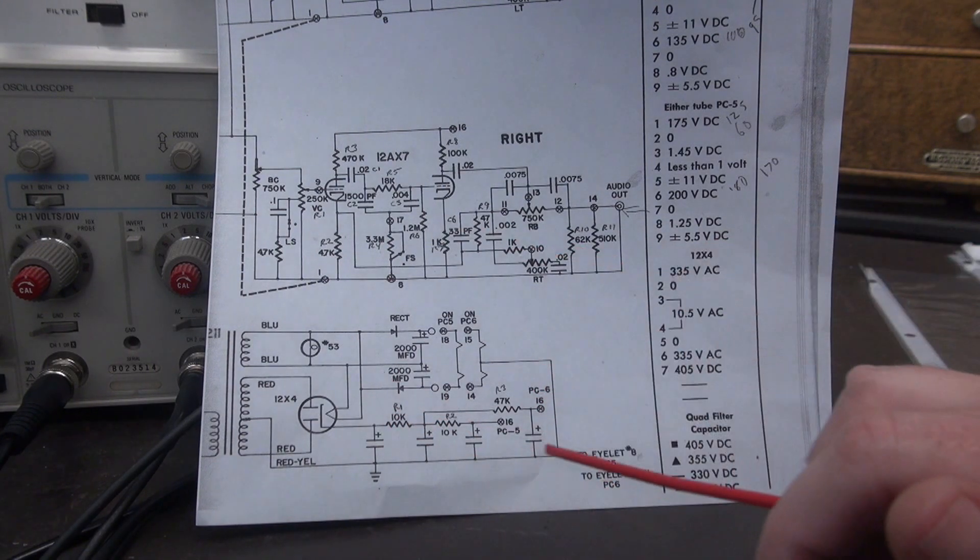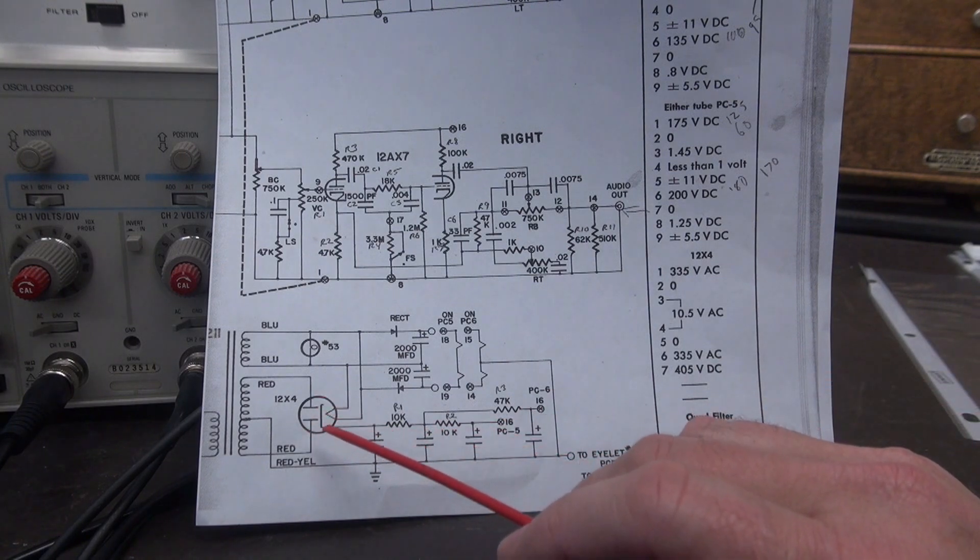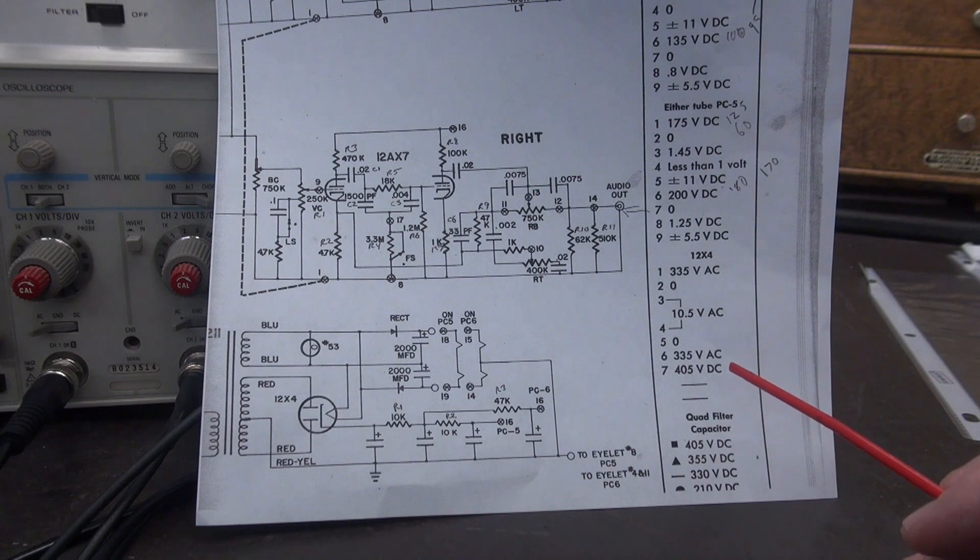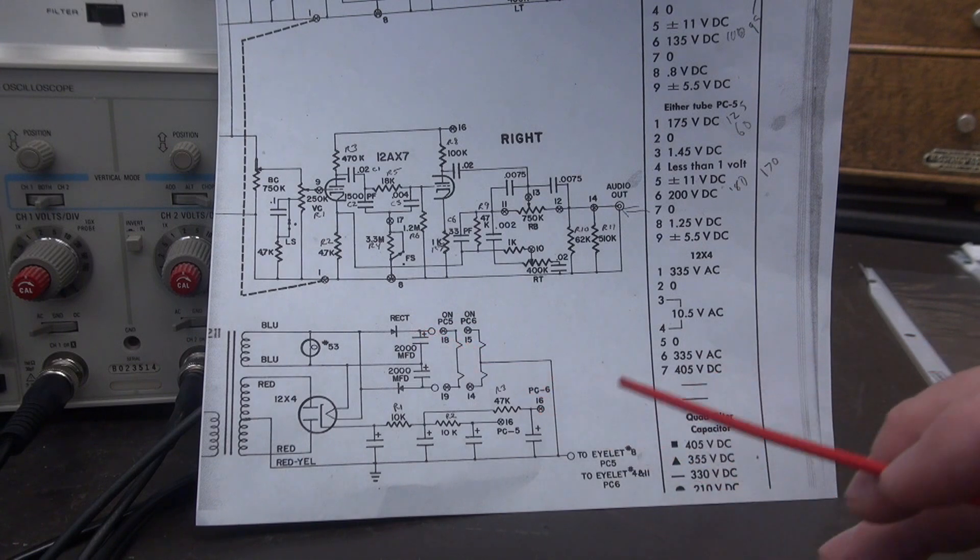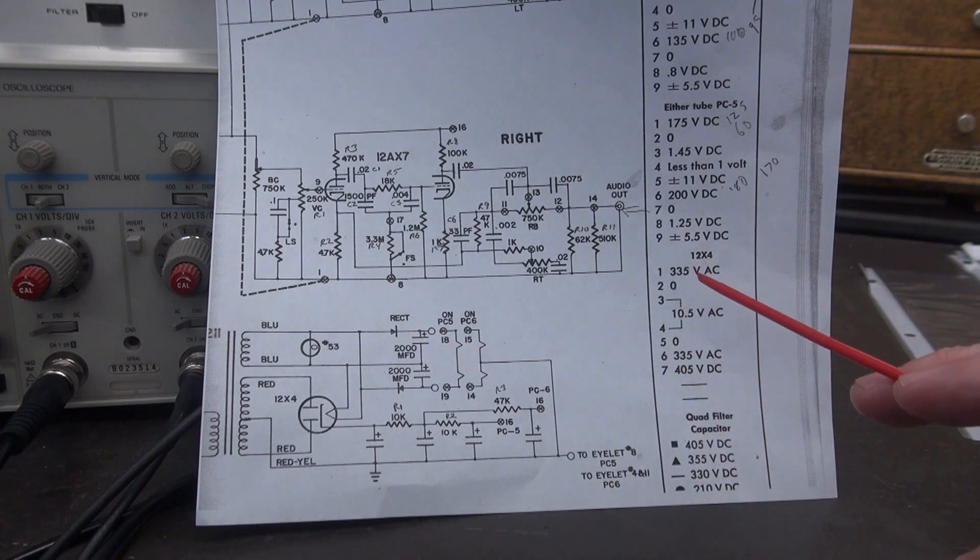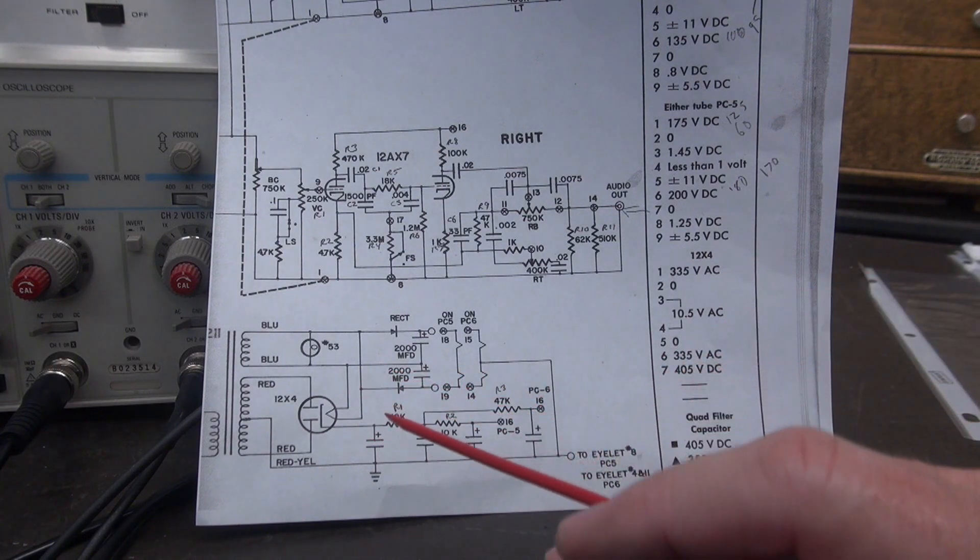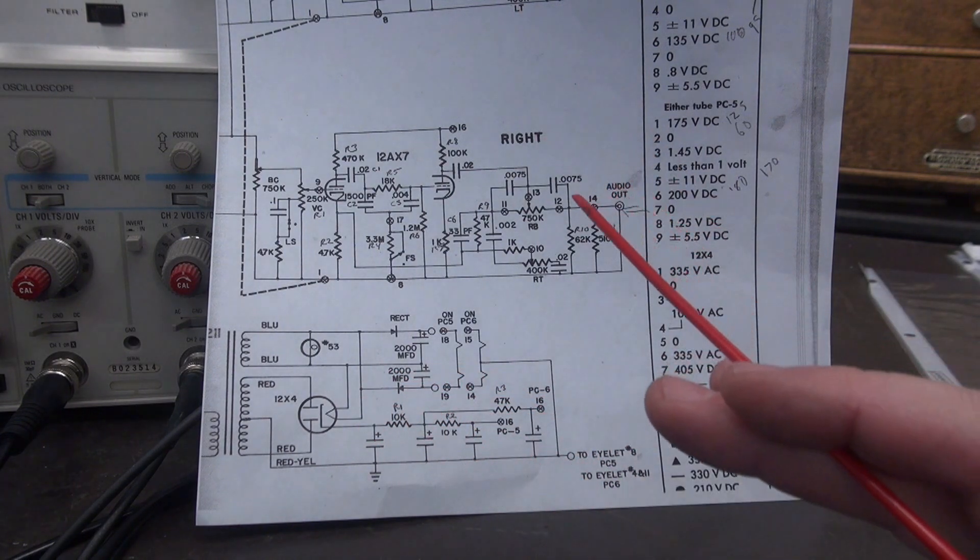This preamp was designed with a rectifier tube to give you the proper voltages to the 12AX7s. You take that out, the voltage goes up. It throws the performance of the preamp off spec. So that's why I use the 12AX4. Take it or leave it.